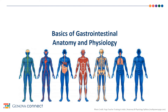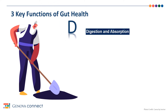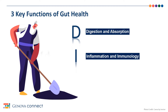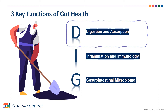The basics of anatomy — structure and organs — and physiology, the function of these organs, of the gastrointestinal tract as it relates to the GI Effects Stool Profile. The GI Effects Stool Profile is organized based on three key functions of gut health arranged in the DIG format: D for digestion and absorption, I for inflammation and immunology, and G for gastrointestinal microbiome. Let's review anatomy and physiology as it relates to each key function of gut health, starting with D for digestion and absorption.